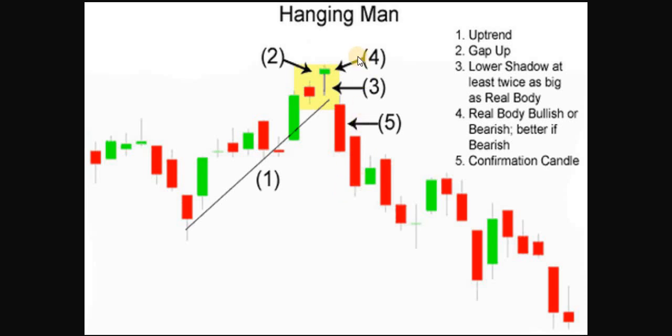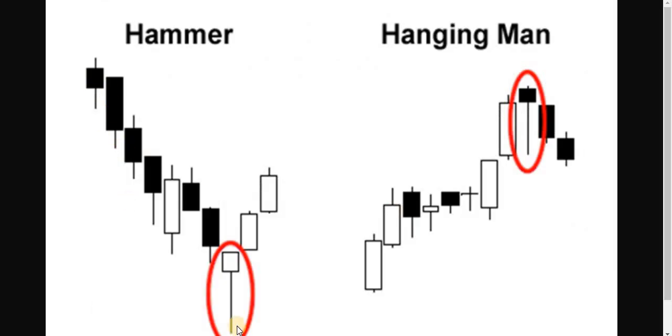Depending on the other signals, or if you are considering other indicators or not. Now just mind that the hanging man appears, or the candle that appears on top of an uptrend is called hanging man. And the one that looks exactly the same but appears at the bottom of a downtrend is called hammer.